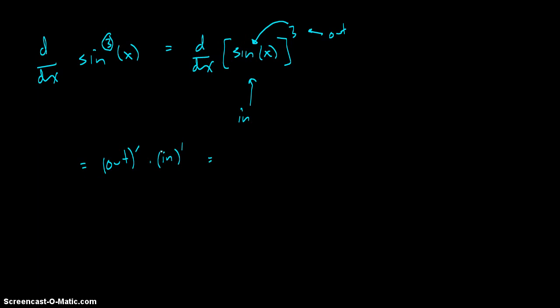So we take the derivative of the outside, that's the third power: 3 times the quantity sine of x to the second power. That's the derivative of the outside.